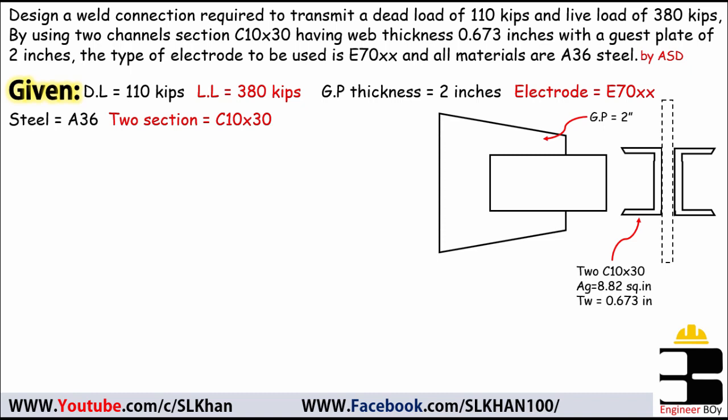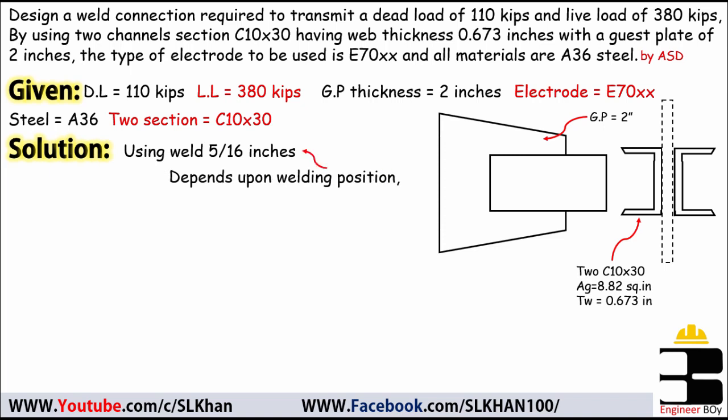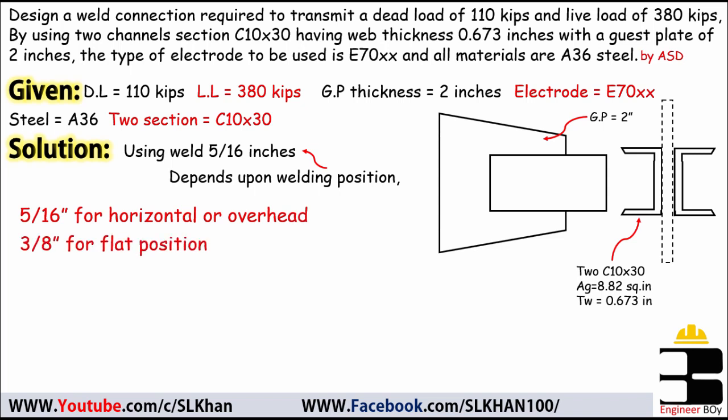The given data is sufficient to work out the weld connection design. In the solution, we will use a weld size of 5/16 inches. This depends on the welding position — for example, 5/16" for horizontal or overhead, 3/8" for flat position, and 1/2" for vertical position. In our case we use 5/16 inches.